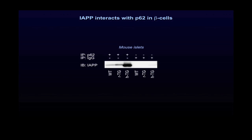We then investigated whether IAPP degradation is mediated by P62. To answer that question, we evaluated by immunoprecipitation the interaction between IAPP and P62 in pancreatic beta cells expressing human IAPP or rodent IAPP as control. As you can see here, in all conditions IAPP interacts with P62. However, this interaction was increased in beta cells expressing amyloidogenic IAPP.